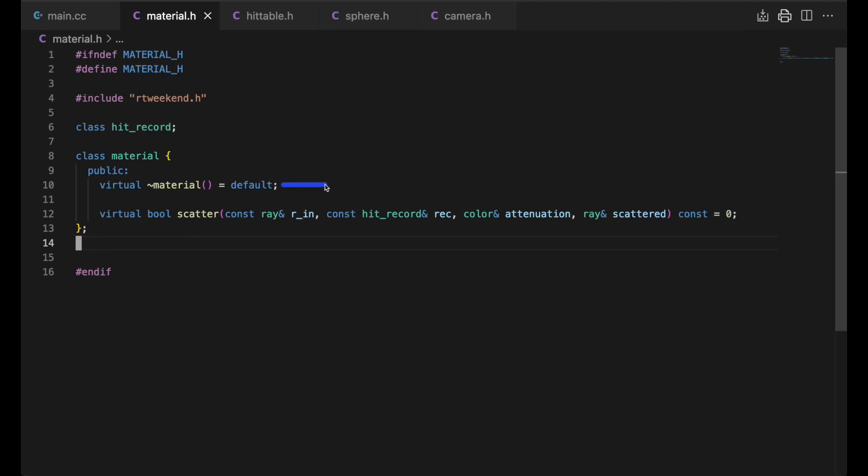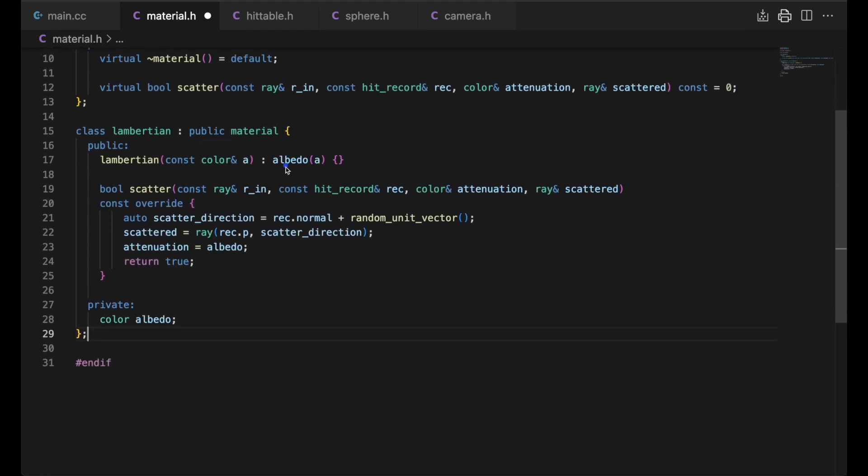As an aside, the equals default syntax is a feature from C++11, meaning to use a default destructor. And so here is our Lambertian material class. It has a private data member for albedo, and in its scatter method, we pass in the hit record, set the scattered and attenuation output parameters, and just return true.